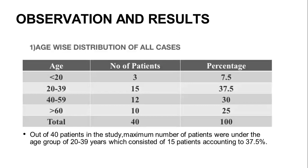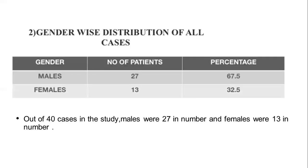Observation and Results. Out of 40 patients in the study, the maximum number of patients were in the age group of 20 to 39 years, consisting of 15 patients, accounting for 37.5%. Gender-wise distribution: out of 40 cases, males were 27 in number and females were 13 in number.